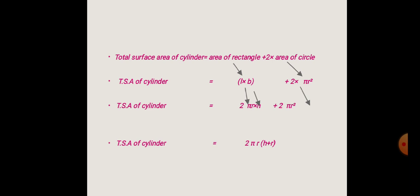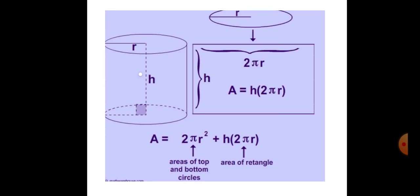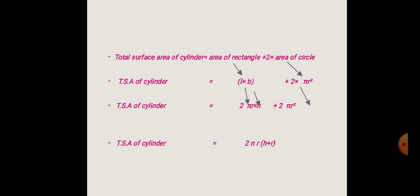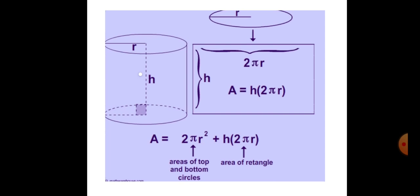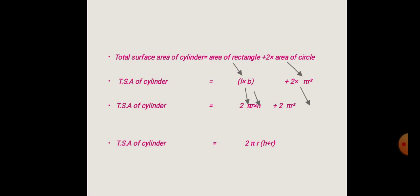When we open the cylinder, the length of the rectangle becomes the circumference of the circle, which is 2πR, and the breadth becomes the height H of the cylinder. So the formula becomes 2πR × H + 2πR². Taking 2, π, and R as common factors, the total surface area of a cylinder is 2πR(H + R).